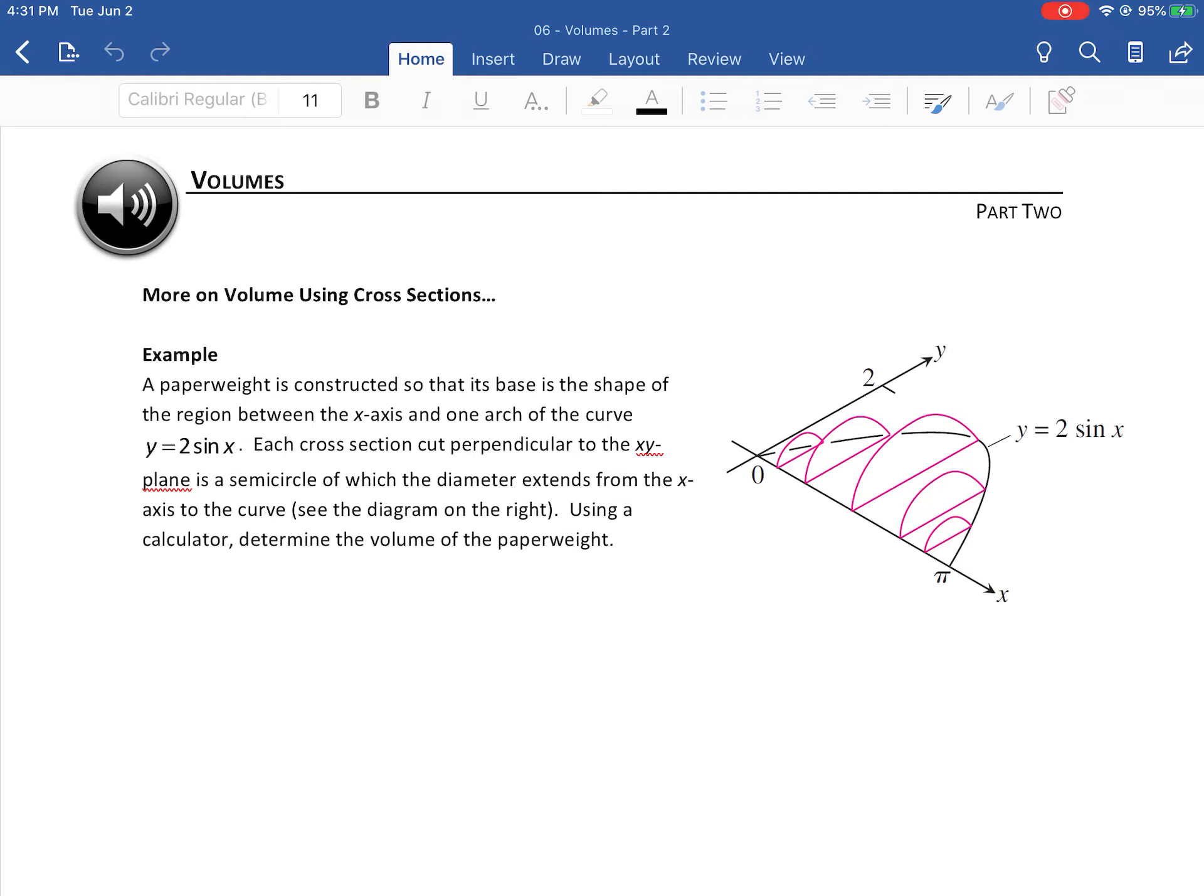A paperweight is constructed so that the base is the shape of the region between the x-axis and one arch of the curve y equals 2 sine x. So what you're seeing is sort of something that would sit down flat on the floor. The xy plane would be like the floor here and this paperweight is the shape of those pink lines there, but a 3D solid. A little tough to visualize but it doesn't go all the way around this time.